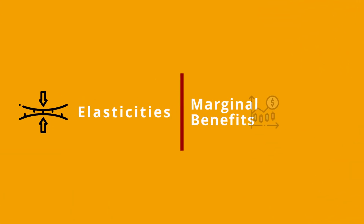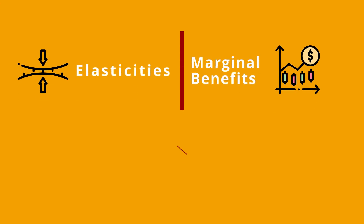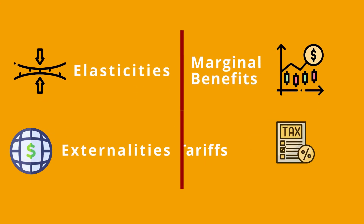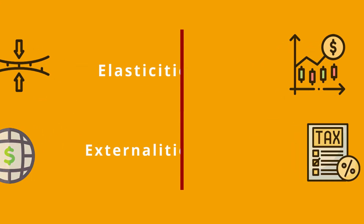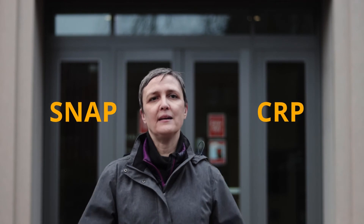We'll probably even include some vocabulary that you didn't even know were used in economics. We'll cover elasticities and marginal benefits, externalities and tariffs, and government programs with names like SNAP and the CRP.